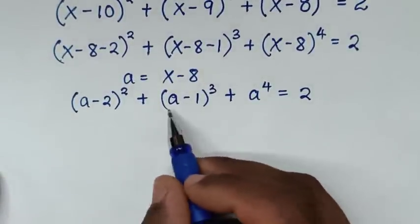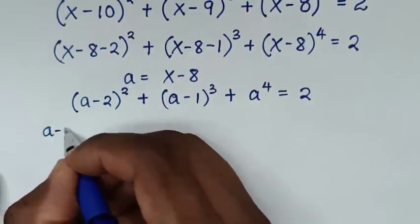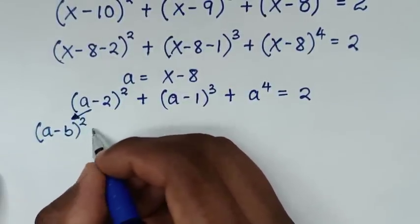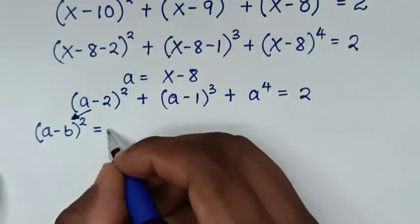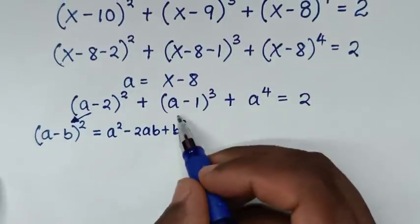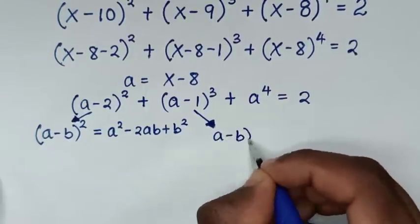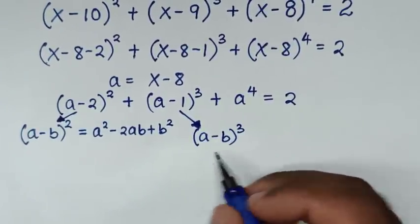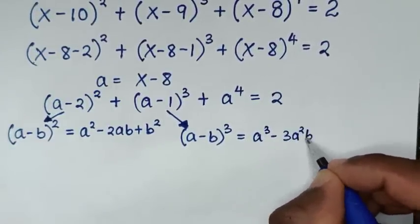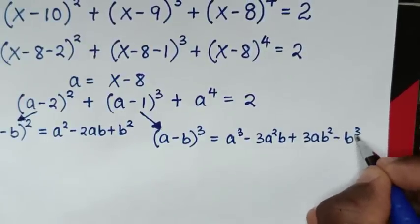In the next step, we'll expand these terms. This (a minus 2) bracket power of 2 is in the form of (a minus b) bracket power of 2. The expansion of (a minus b) bracket power of 2 is a square minus 2ab plus b square. And this (a minus 1) bracket power of 3 is in the form of (a minus b) bracket power of 3. The expansion of this is a power of 3 minus 3a square b plus 3ab square minus b power of 3.